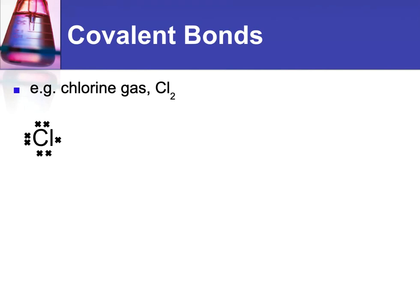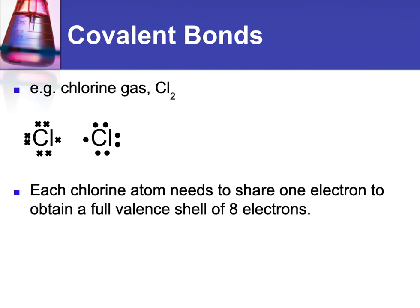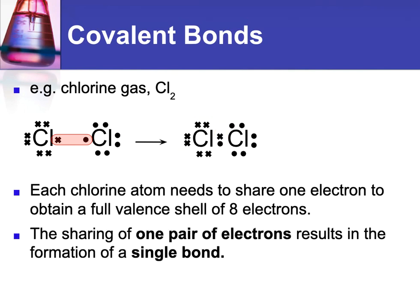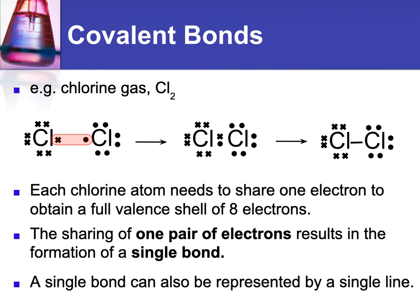If we look at chlorine gas, which is two chlorine atoms — so these are the Lewis diagrams for chlorine atoms. I've placed the unpaired electrons close together, because they're the ones that are going to be involved. I've denoted the two chlorines with different symbols for the electrons, just so we can keep them straight. Each chlorine atom needs to share one electron, and then it would have a full valence shell. So they're going to share their electrons, and those two electrons come between the two atoms, and now they both have a full valence shell of eight. When one pair of electrons is shared, this is the formation of a single bond.